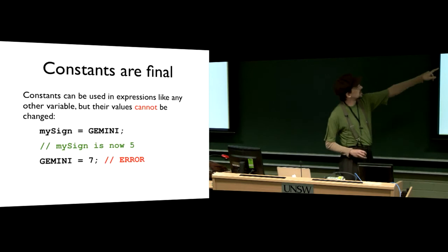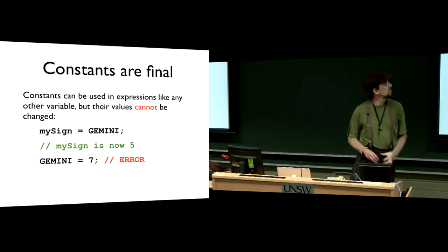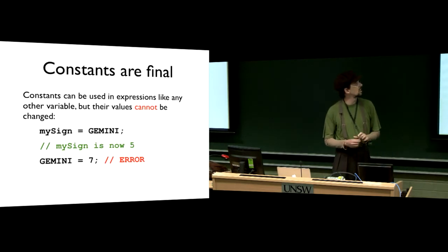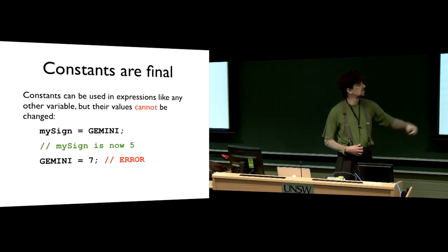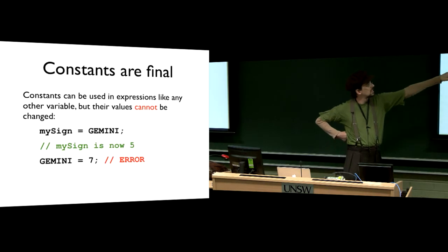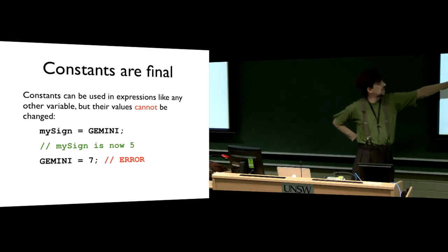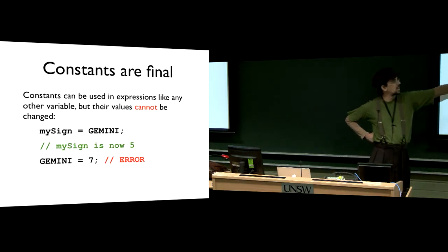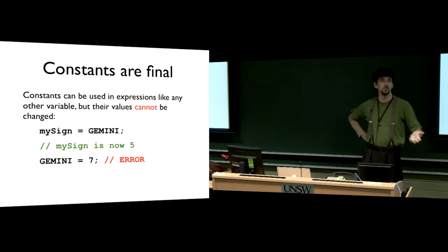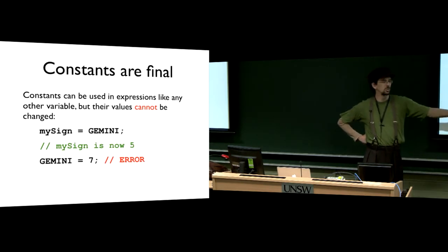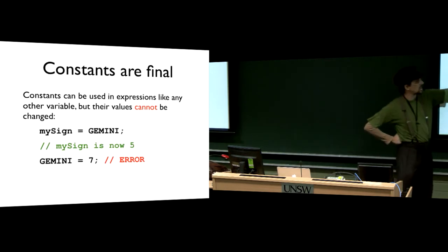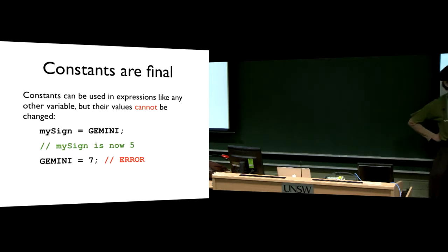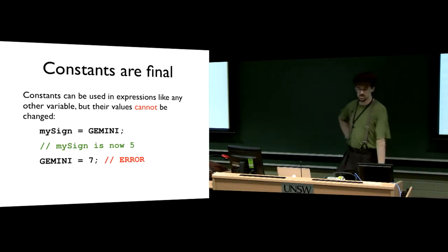Because it's final, we can use this constant in our code and read its value anytime we want. For example, if we wanted to make my sign Gemini, we'd say my sign equals Gemini. The value of my sign would now be 5, because Gemini is 5. We can read the value from Gemini and write it into my sign, but we can't do it the other way around. We can't write a new value into Gemini because it's final. Final means I'm setting it now, and you'll never be able to set it again.